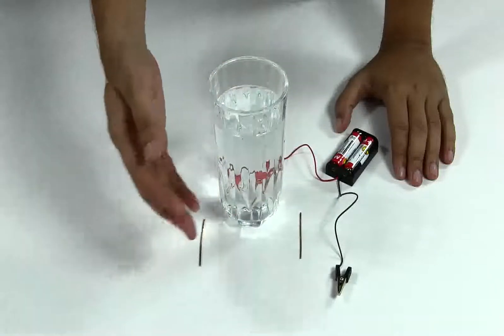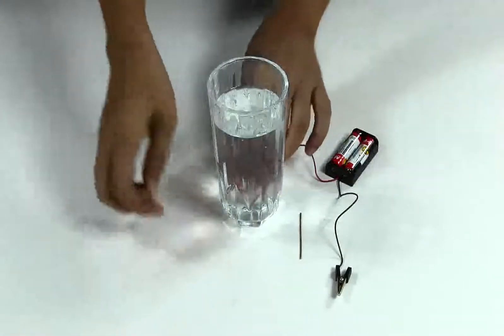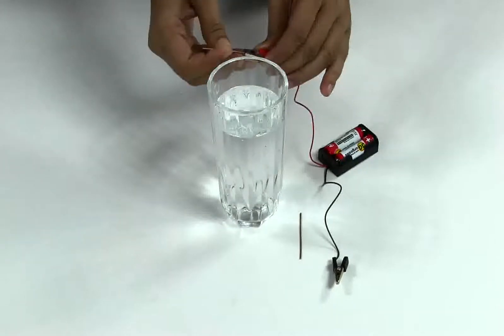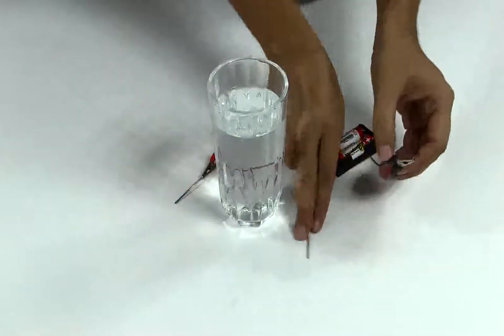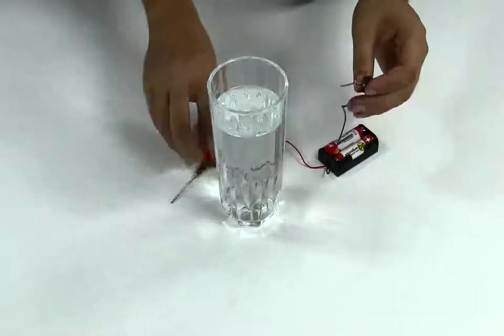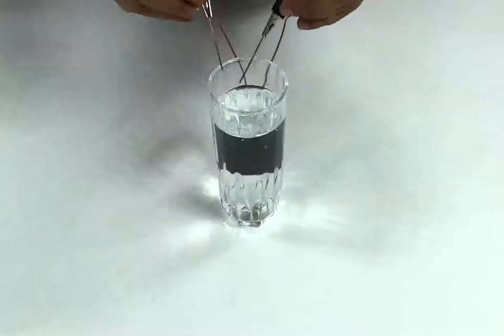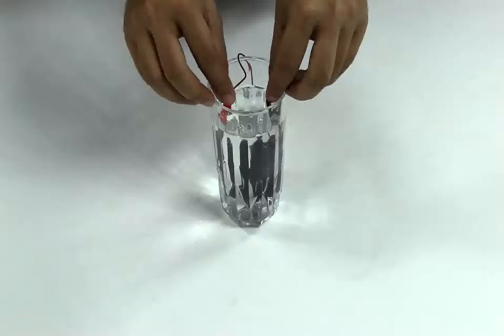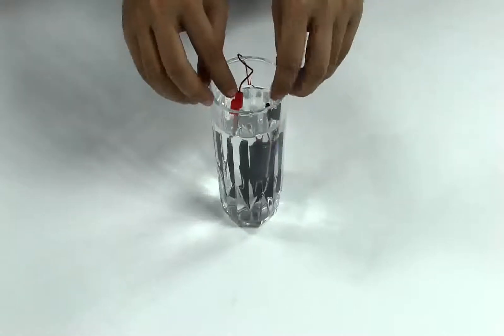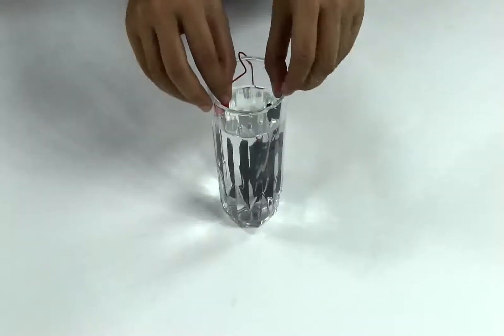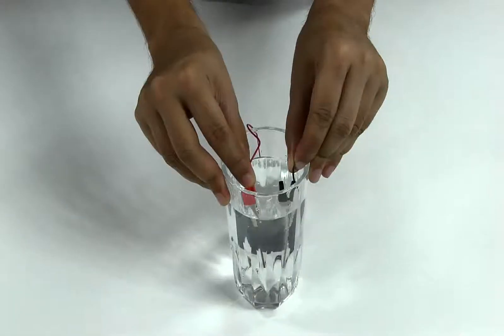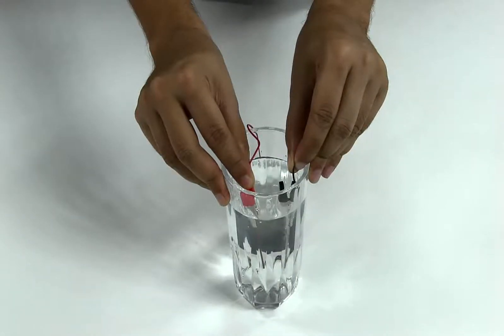Now I'm going to attach two copper rods to the two ends of the battery. Now I'm going to dip them inside this glass. Here we can already see that some bubbles are forming up.